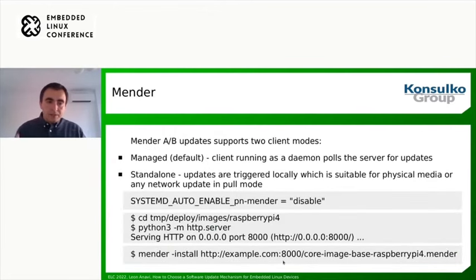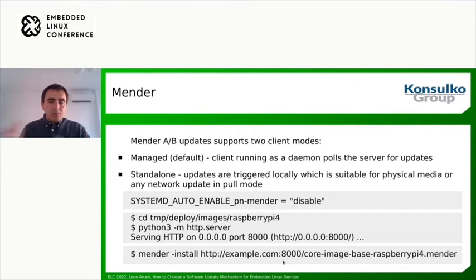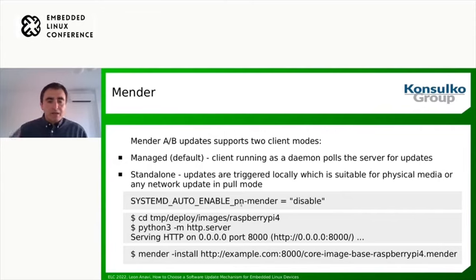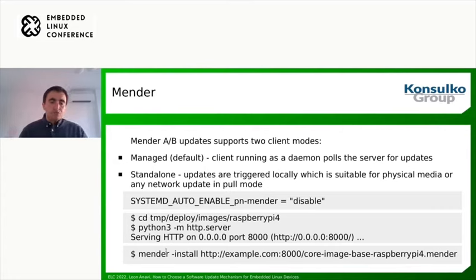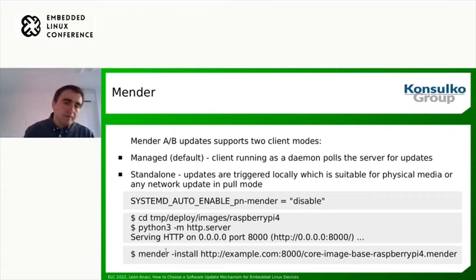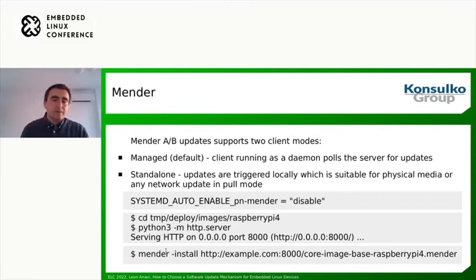Switching back to Mender, the standard standalone installation approach is pretty much the same as with RAUC: build an image, disable the systemd service that automatically starts the Mender client, run an HTTP server on the build machine, and on the embedded device manually install Mender. This is the standalone version. However, it's highly recommended to use the managed approach, where the Mender client runs all the time as a daemon and pulls updates from the server. And again, Mender also provides a server so you can manage the devices on which you're performing updates.